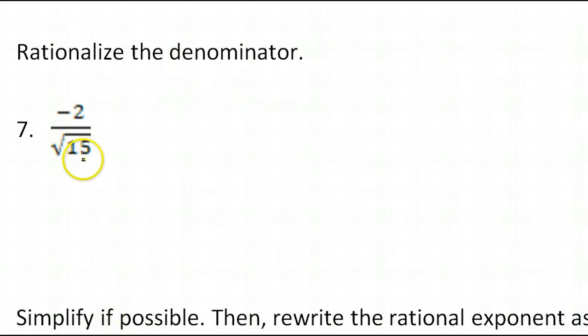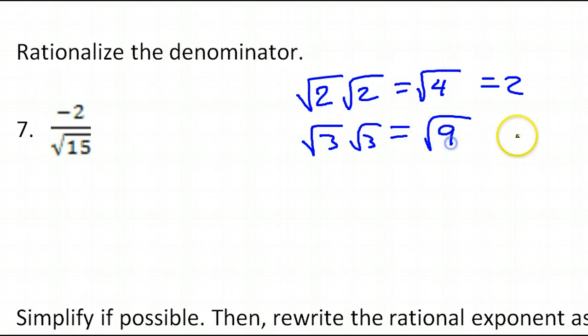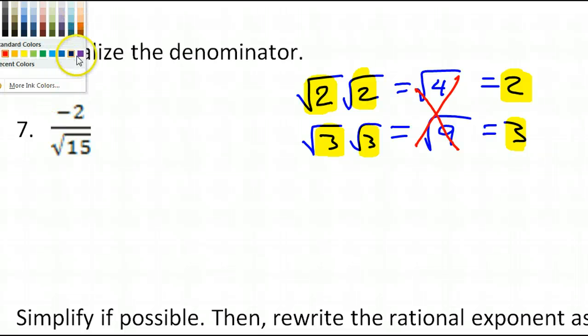Here on number 7, we are supposed to rationalize the denominator. That means we need to rewrite this so that there is no radical in the denominator. Well, remember what we learned a long time ago, the pattern. Say if we had radical 2 times radical 2. Well, that would be radical 4, which is 2. Say if I had radical 3 times radical 3. Well, that would be radical 9, which is 3. But you see the pattern. Radical 2 times radical 2 is 2. Radical 3 times radical 3 is 3. Once you see that, then you realize that you can definitely skip this middle step. So let's kick it up a notch.